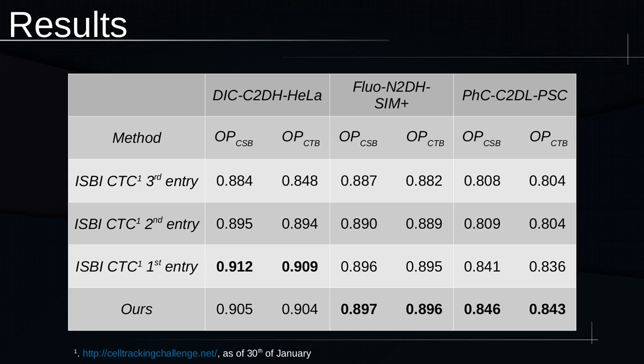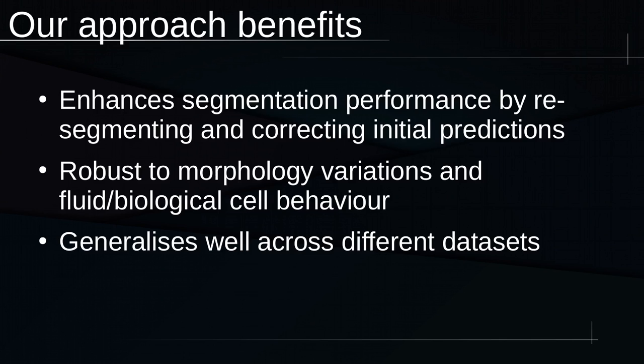But in the case of the DIC dataset, it contains large cells that don't move a lot, so a state-of-the-art approach has nothing to gain from our resegmentation approach. But what we introduce is an enhancement over the initial segmentation by applying resegmentation and correcting initial predictions no matter what the initial segmentation algorithm was.